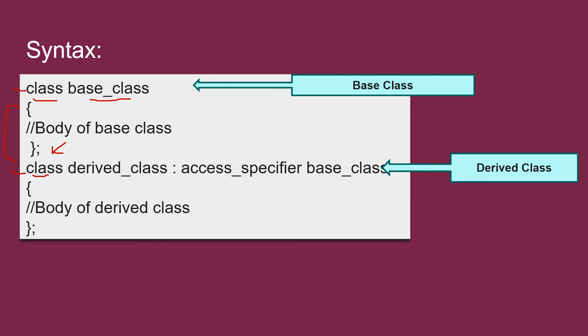Now we will declare the derived class with the keyword class, name of your derived class, then a colon followed by the access specifier which can be public, private or protected. Then the name of your base class from where this particular class has been derived. Then we include the body of your derived class and the derived class ends.